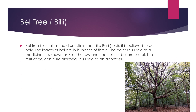The last one is bale tree or balee. Bale tree is as tall as drumstick tree. Like basil or tulsi, it is believed to be holy. The leaves of bale are in a bunch of three. The bale fruit, also known as bilu, is used as medicine. The raw and ripe fruits of bale are useful. The fruits of bale can cure diarrhea and it is used as an appetizer. Drinks and pickles are also made from the ripe fruits of bale. The fruit also cures dysentery.